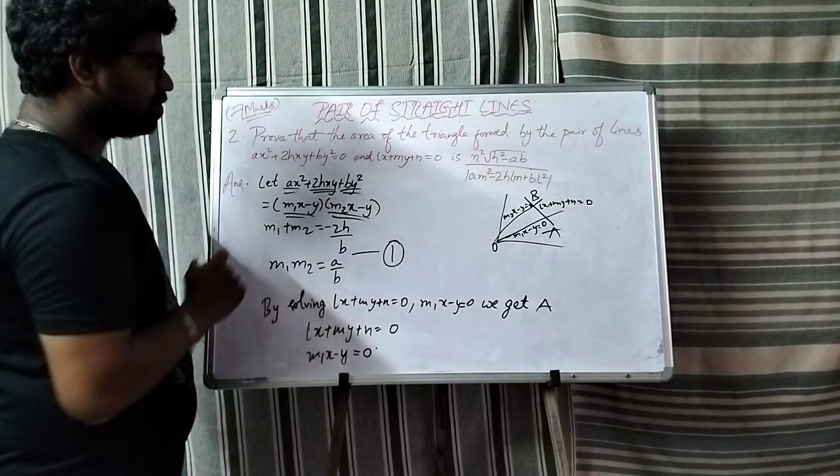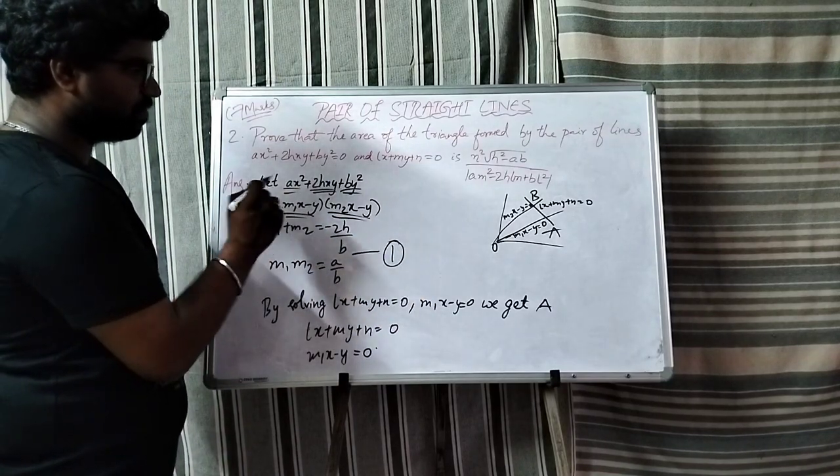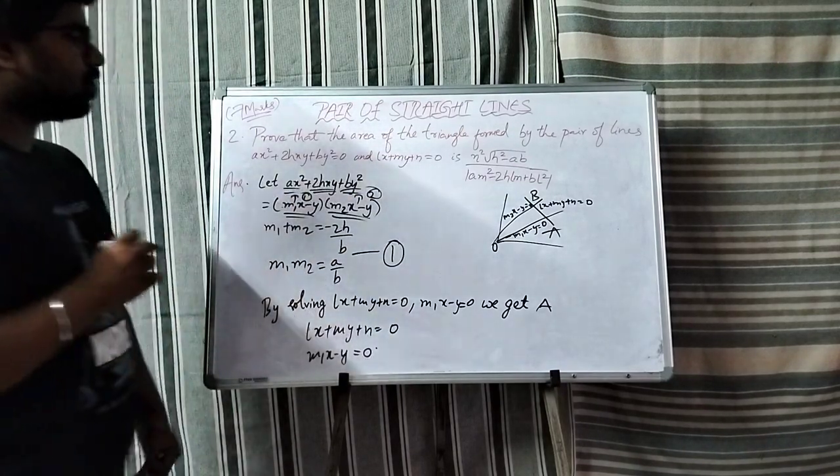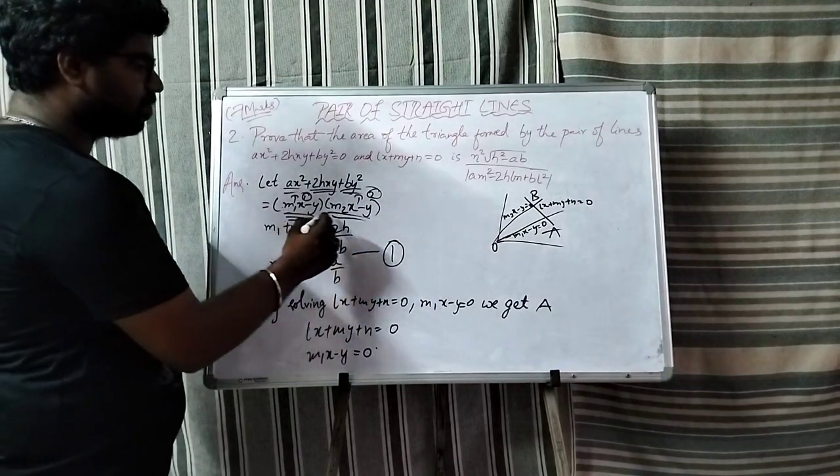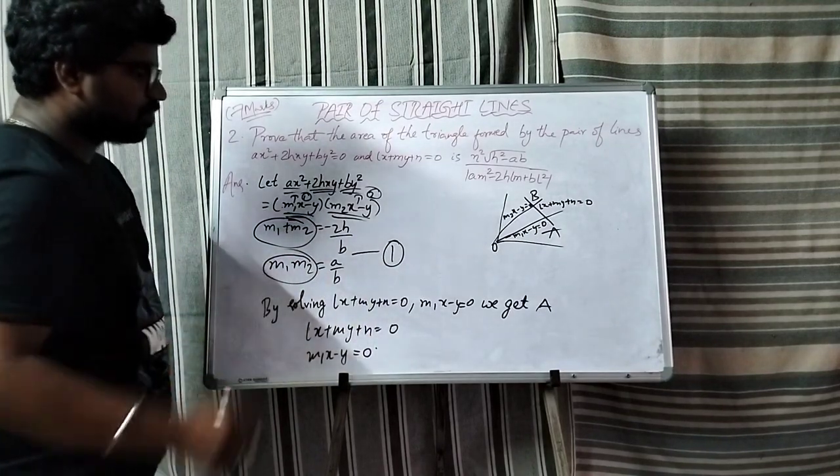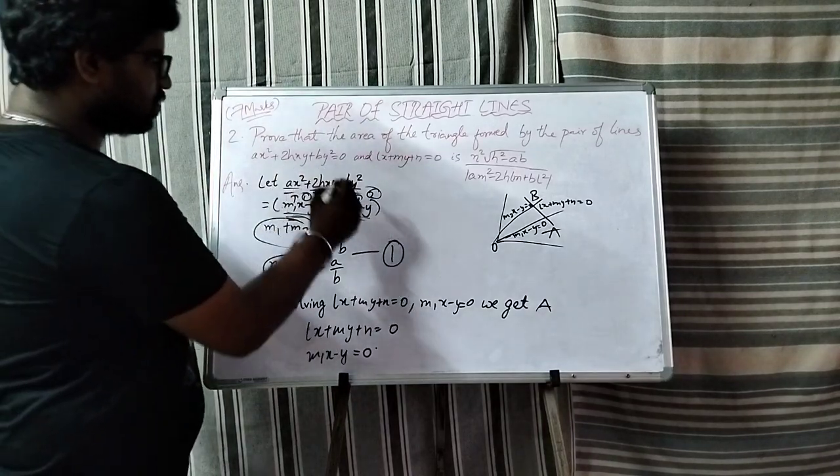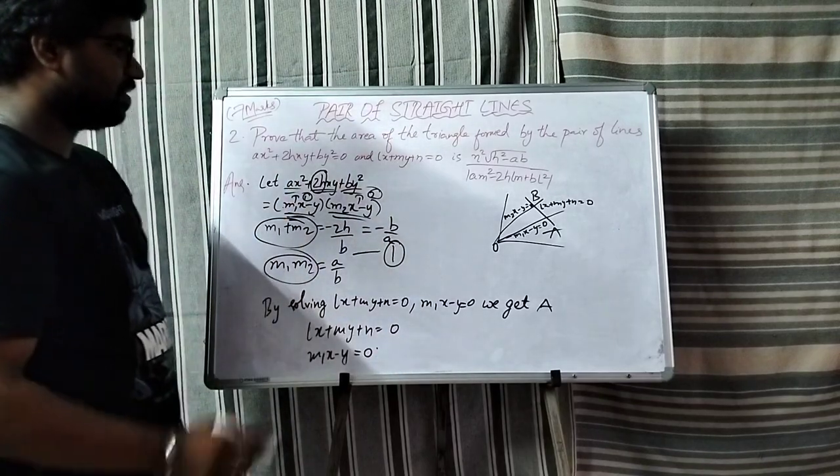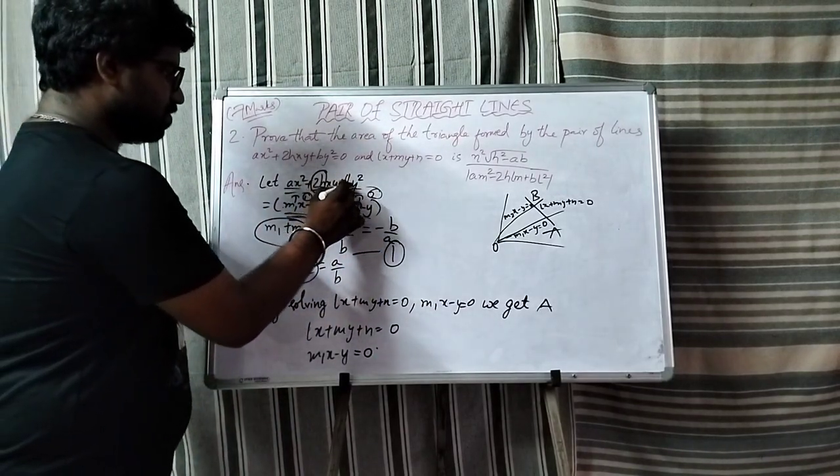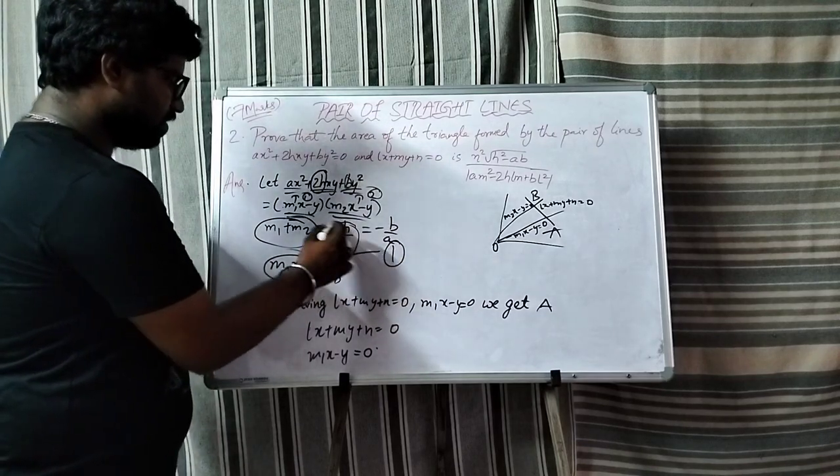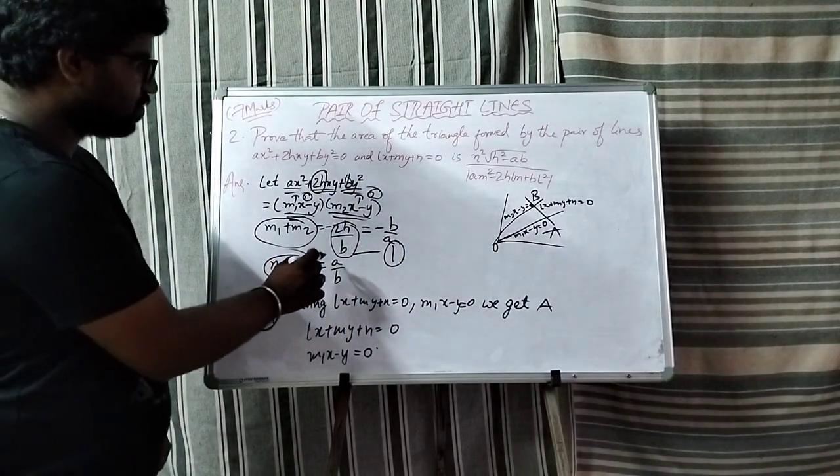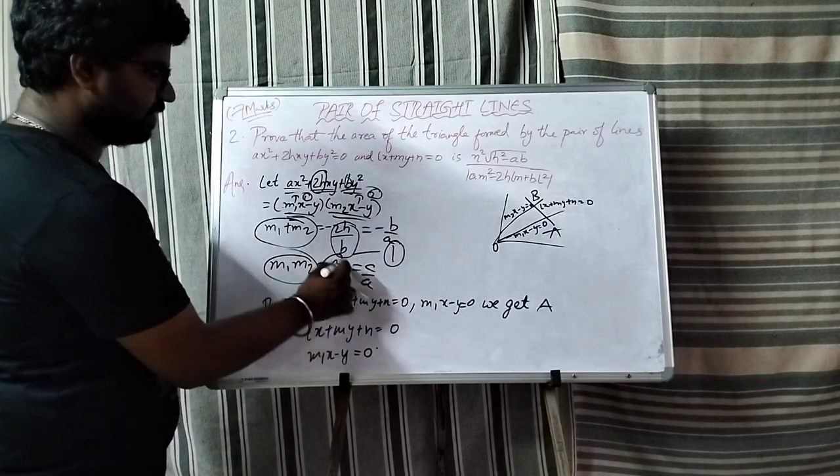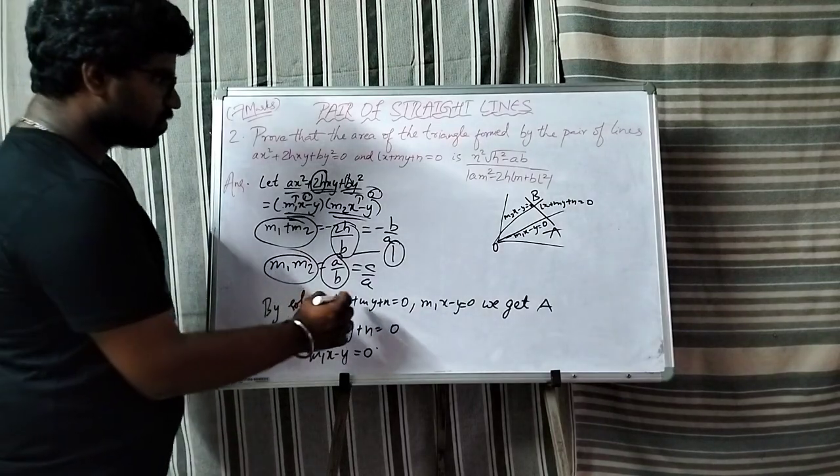of two straight lines. So m1x minus ym is first equation, m2x minus ym is second equation. Here sum of the roots and product of the roots. Sum of the roots means minus b by a, so minus 2h by b. And product of the roots means c by a which is nothing but a by b.